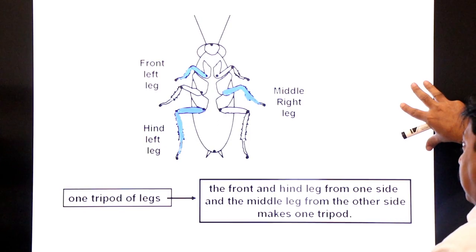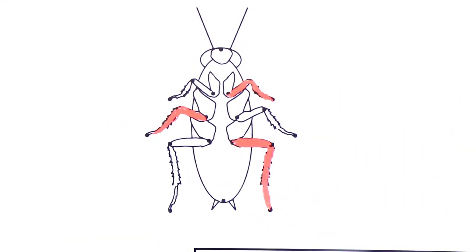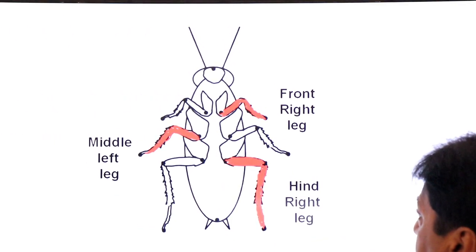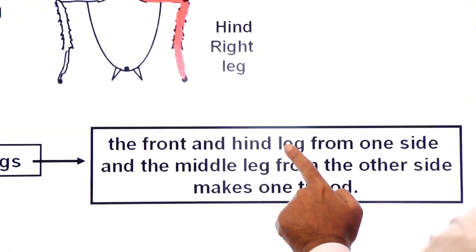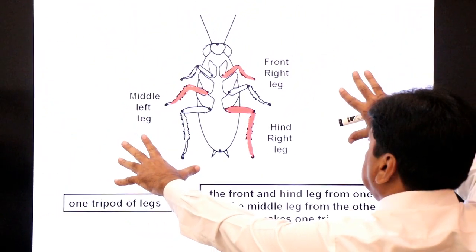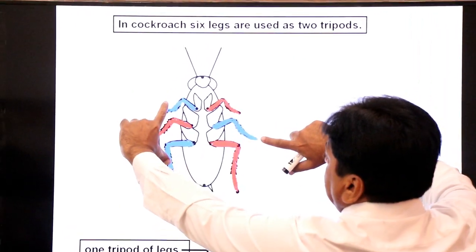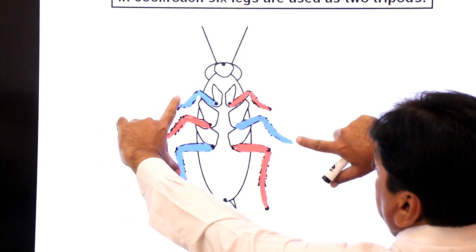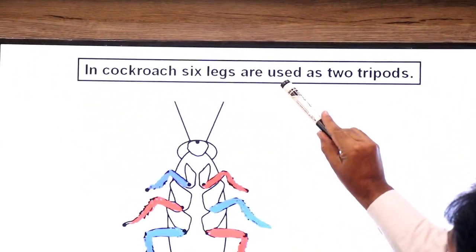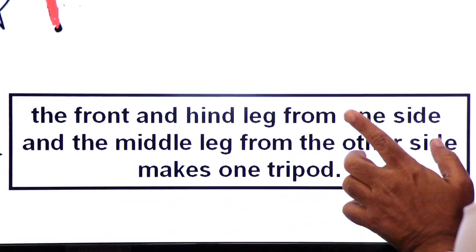The second tripod of cockroach's legs is shown in red color. This tripod consists of the front right leg, the hind right leg, and the middle left leg. So in cockroach, six legs are used as two tripods. The front and hind leg from one side and the middle leg from the other side makes one tripod. In this diagram you can clearly observe a cockroach having two tripods.